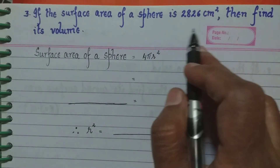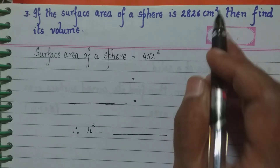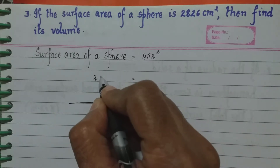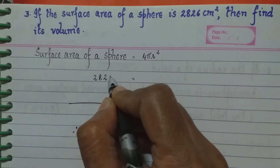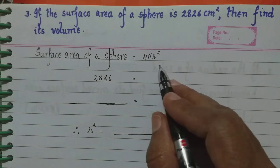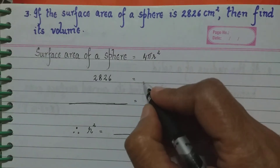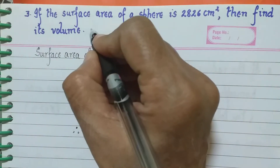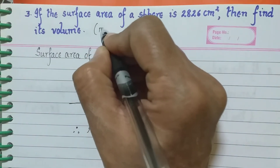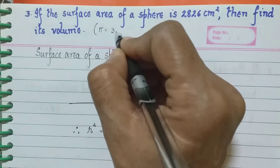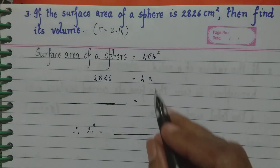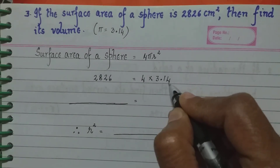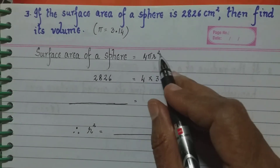The surface area of the sphere is already given as 2826. So in place of surface area of the sphere, we write 2826. Now we have 4πr², so we write 4 into π. Pi here was given as 3.14, so we put 3.14 into r².